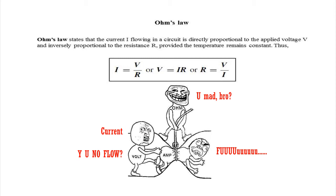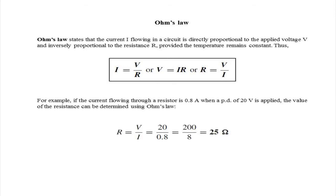For example, if the current flowing through a resistor is 0.8A, when a potential difference of 20V is applied, the value of the resistance can be determined using Ohm's law. R equals V divided by I. So in our case, 20 divided by 0.8.